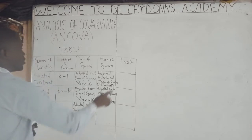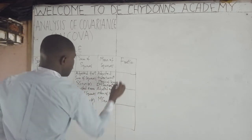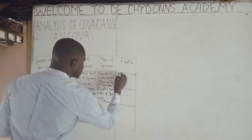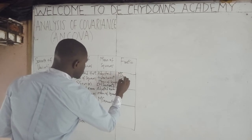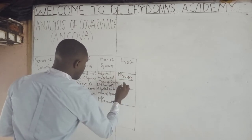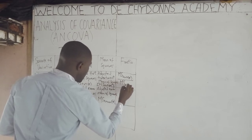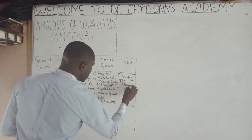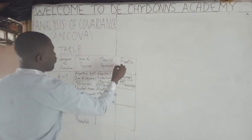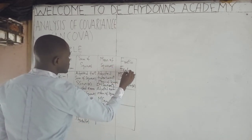For the F-ratio, it is the adjusted treatment mean of squares divided by the adjusted error mean of squares. Once you divide, the result is called F-calculated.